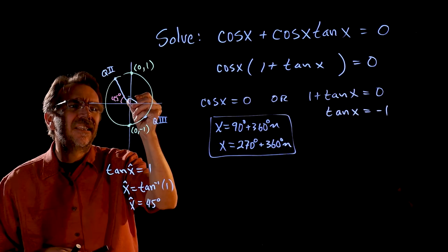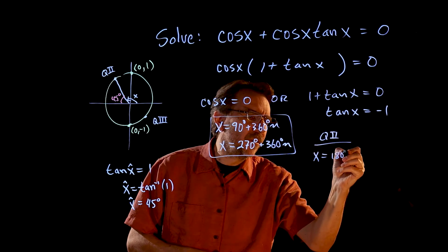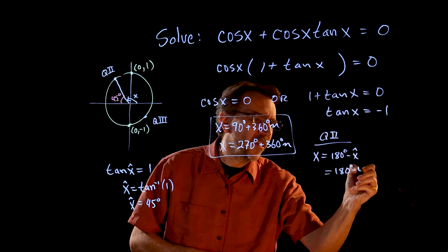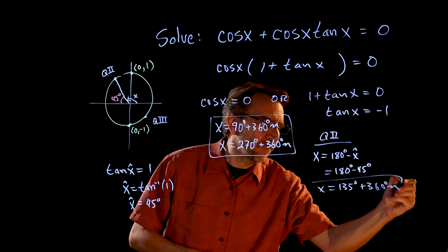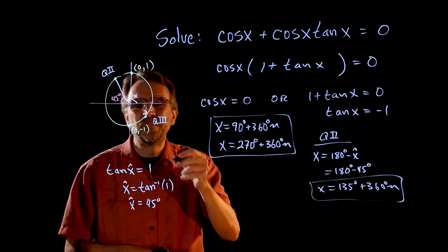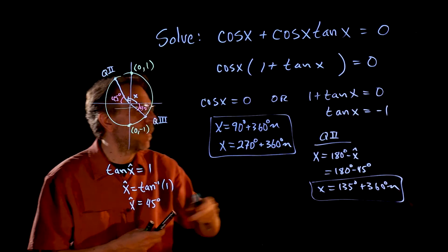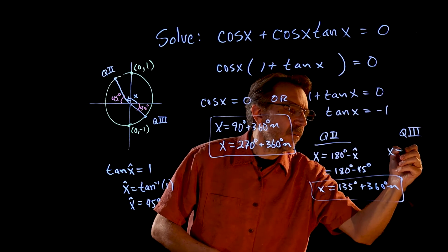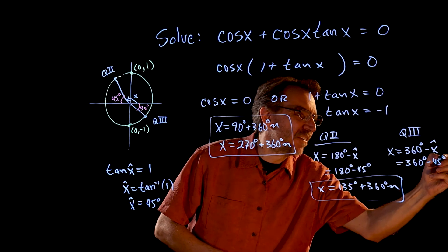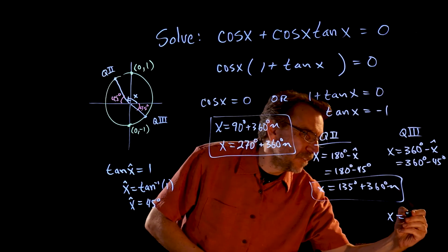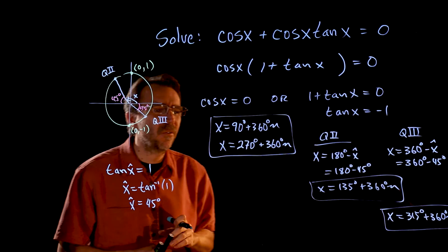So if the reference angle is 45 degrees, in Q2 we can say x equals 180 degrees minus the reference angle. In this case, 180 degrees minus 45 is 135. And then we'll tack on 360 degrees n, and we'll get infinitely many answers coterminal in quadrant 2. Now in quadrant 3, the reference angle is 45 degrees, so to get the angle we want, we take 360 degrees minus the reference angle — 360 minus 45 — x will equal 315 degrees, plus 360n, giving infinitely many answers coterminal in quadrant 3.